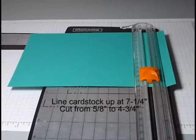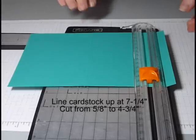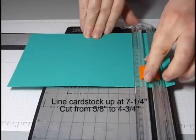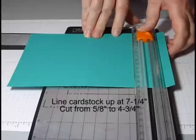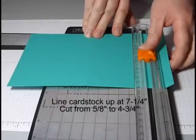Keeping our cardstock in the paper trimmer in the same direction as it was when we scored, we're going to line up our paper at 7 1⁄4 inch and cut from 5 1⁄8 inch up to 4 3⁄4 inch.